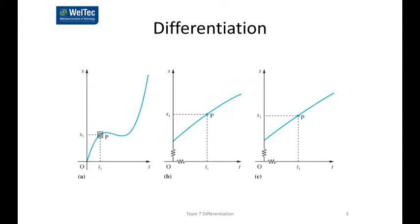Let's have a look at Diagram A. Suppose we want to find the velocity at the time t equals t1, so at point P. The velocity is given by the gradient of the graph at that time, at the time t equals t1. In Diagram B we can enlarge the graph, and then we can enlarge it again in graph C.